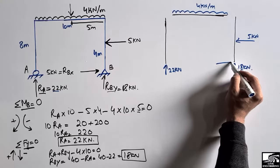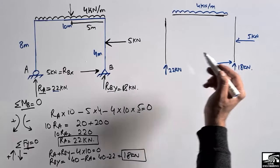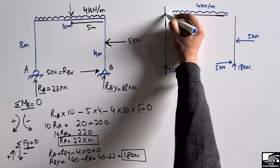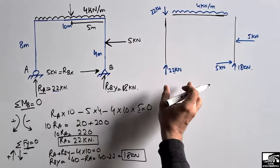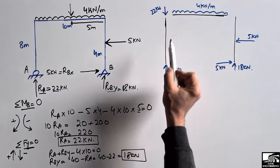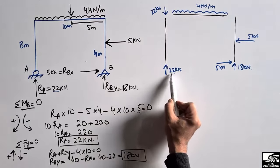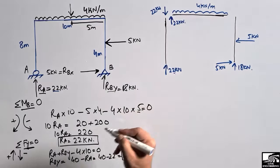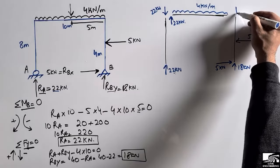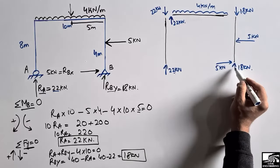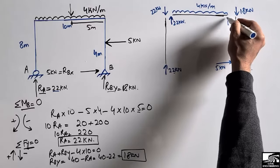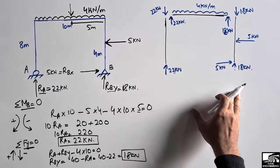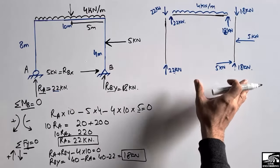The 5 kN horizontal load acts on the column and is resisted by the hinge support. In the case of a frame, the 22 kN reaction at A must be transferred upward through the column — it acts downward at the top joint and is balanced by 22 kN acting upward into the beam. Similarly, the 18 kN is transferred to the beam joint. This is how forces are distributed in the free body diagram for the frame.